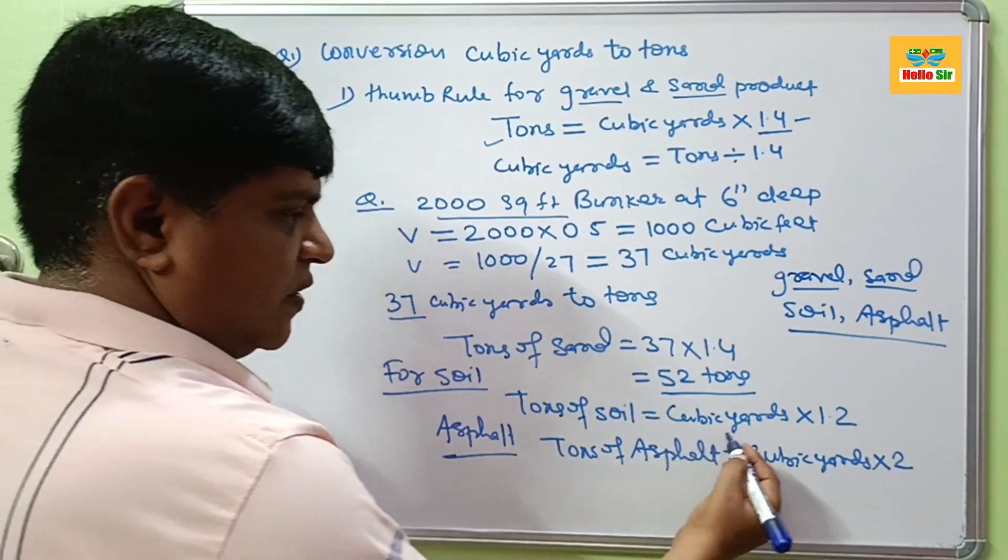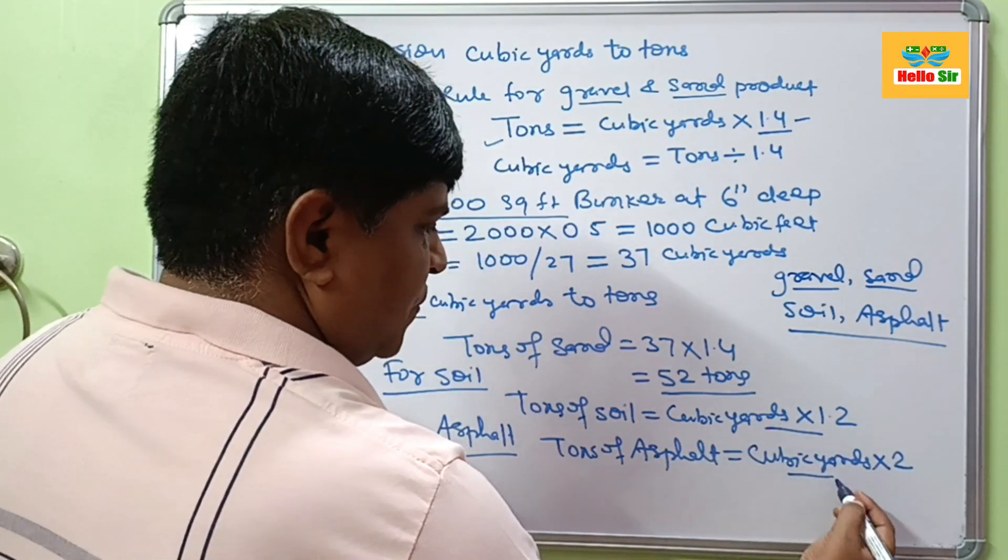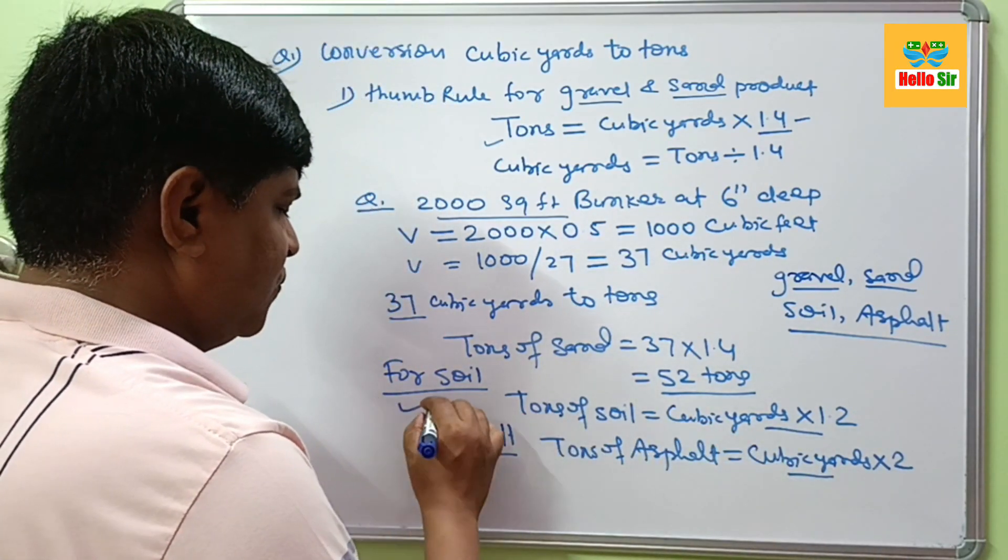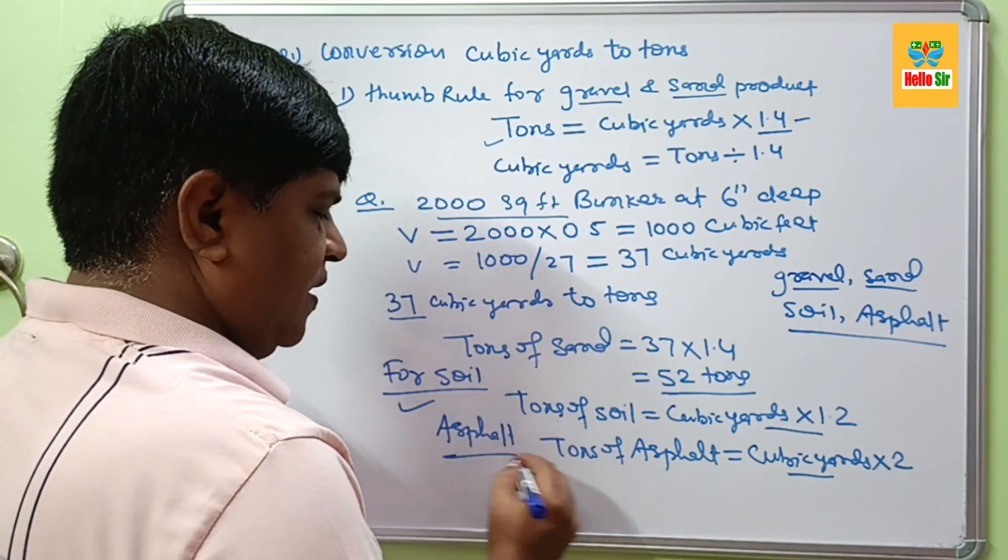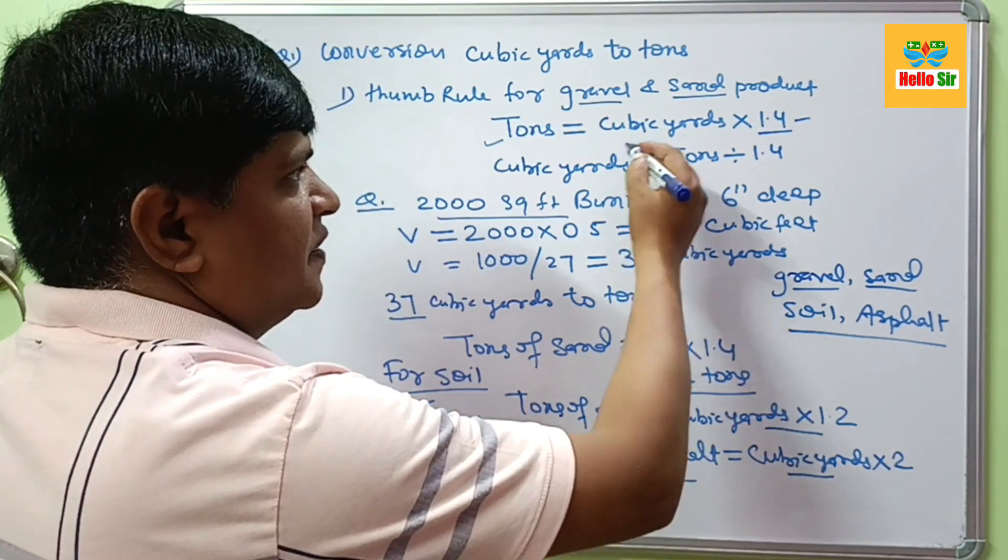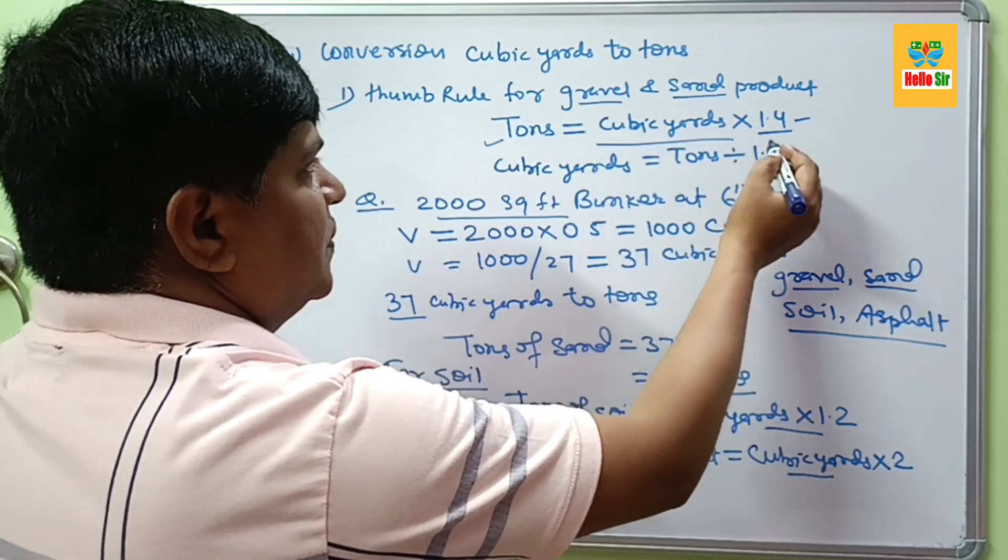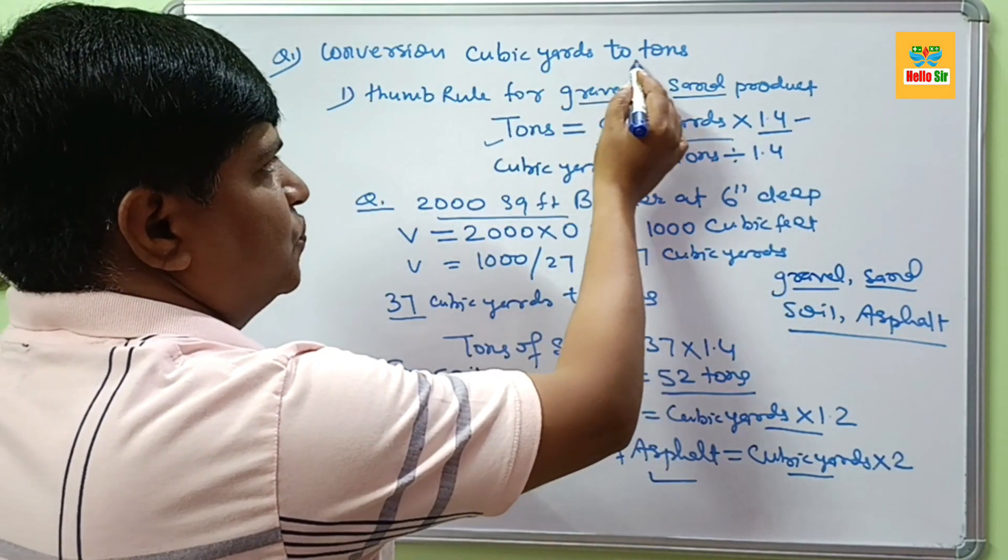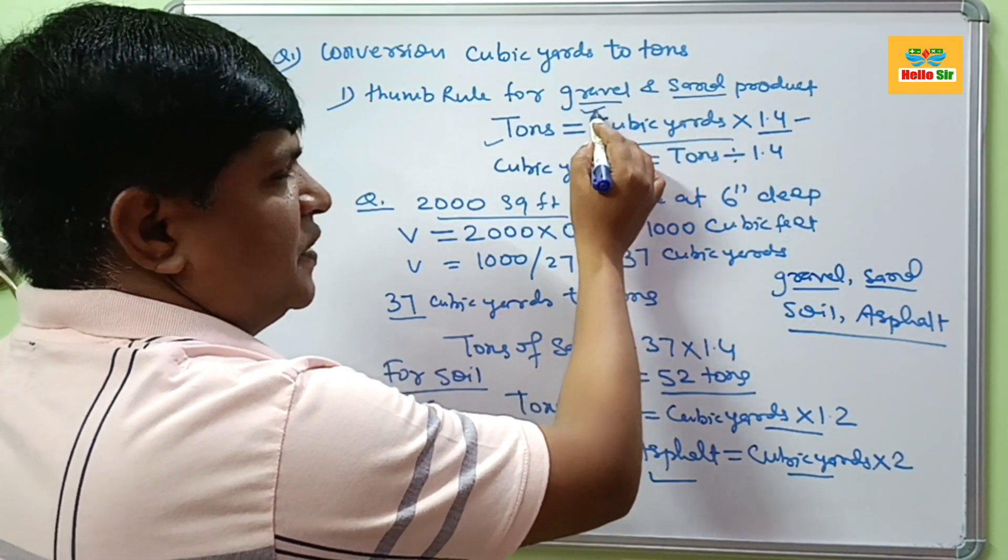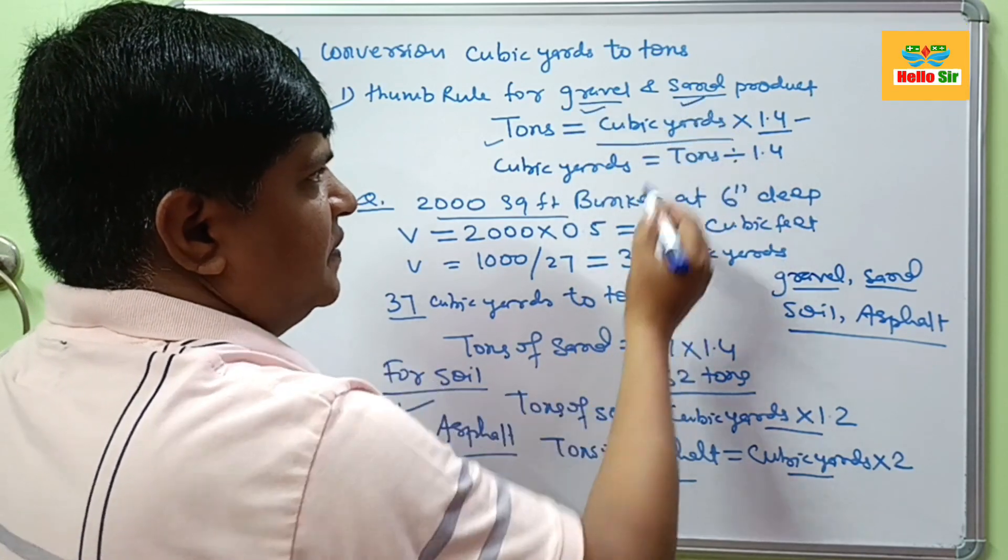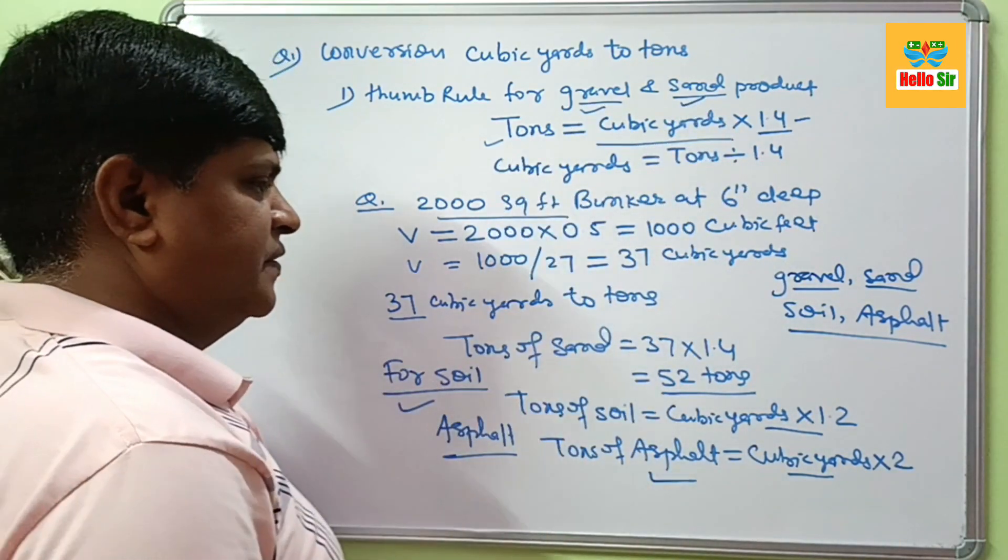And this thumb rule formula includes calculation of tons of soil and tons of asphalt. And this formula is used for conversion of cubic yards to tons. And this is used for estimation of gravel and sand quantity in tons. Thank you.